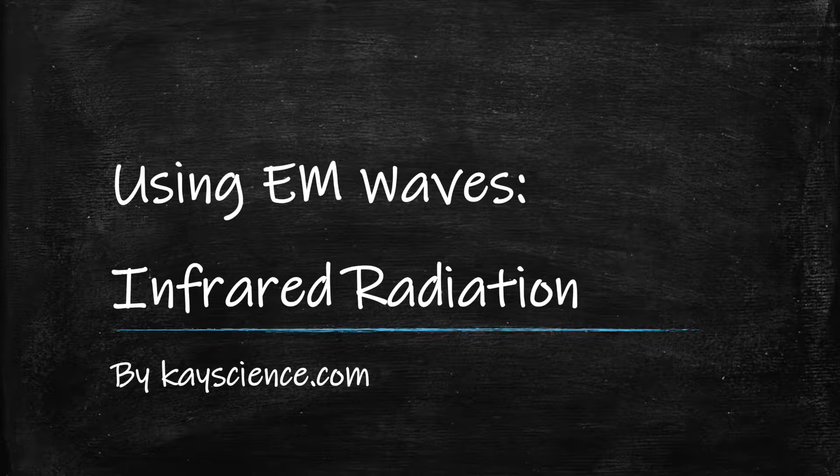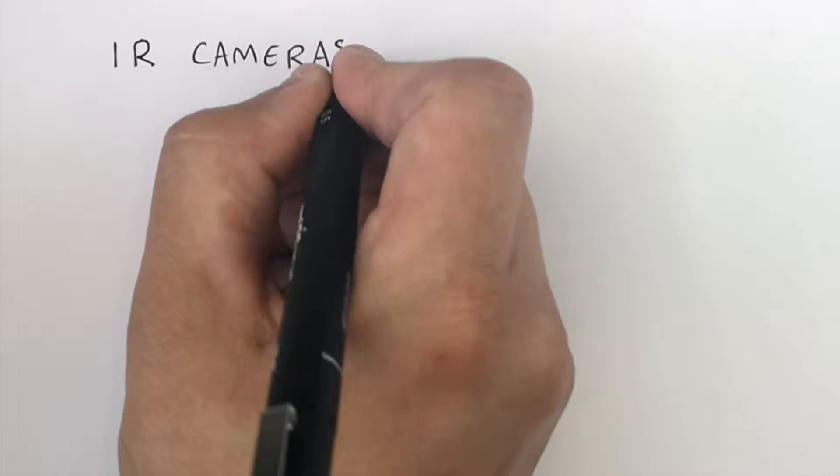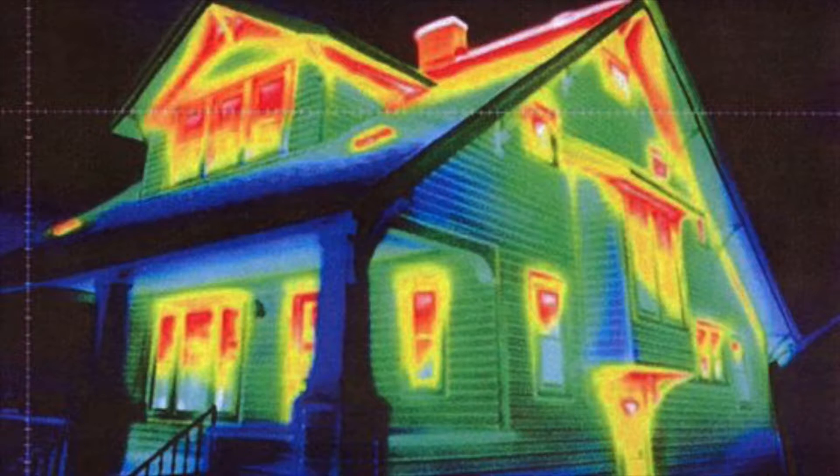Using the electromagnetic wave infrared radiation by kscience.com. Infrared cameras use infrared radiation. If you want to see what parts of your house are not insulated well, you could use an infrared camera to measure this.